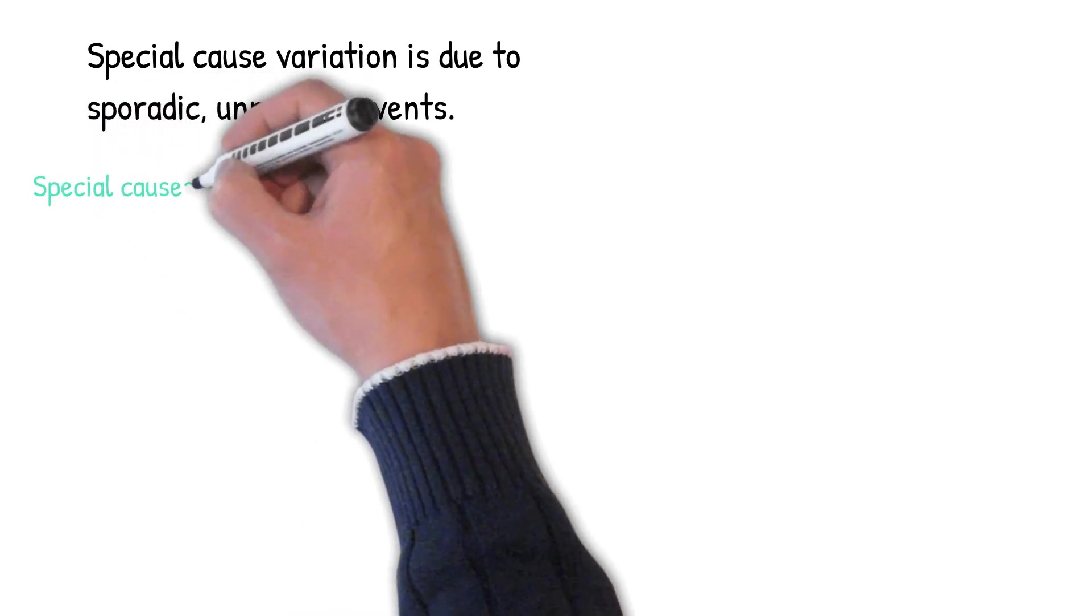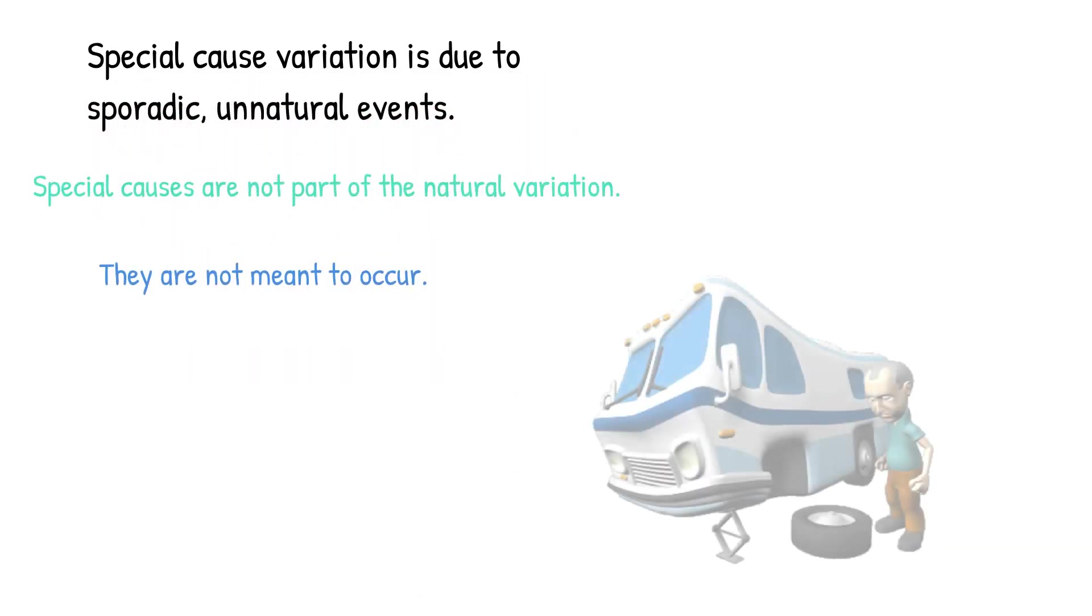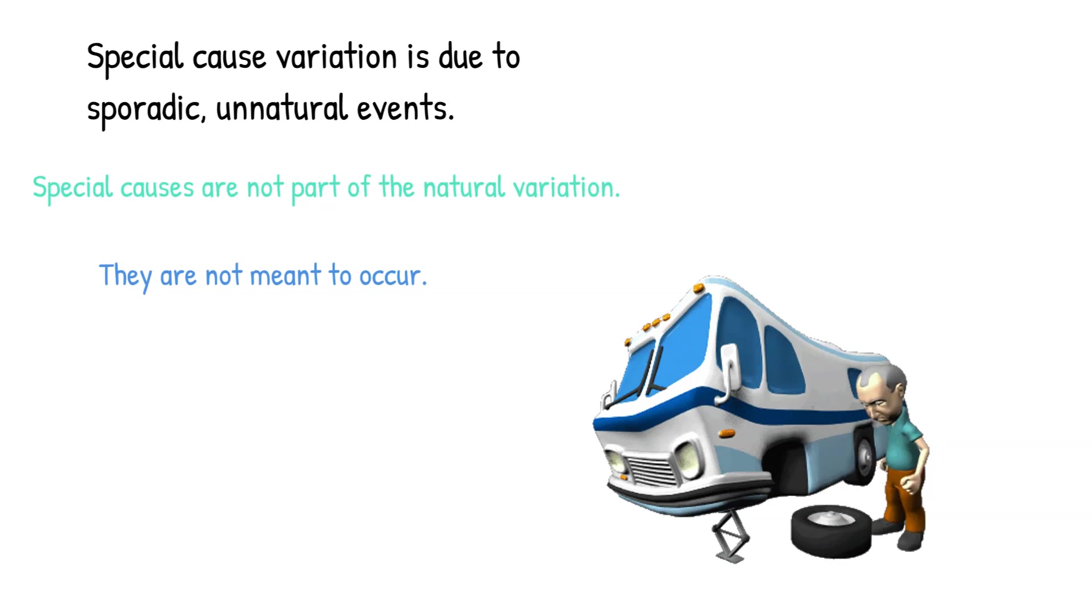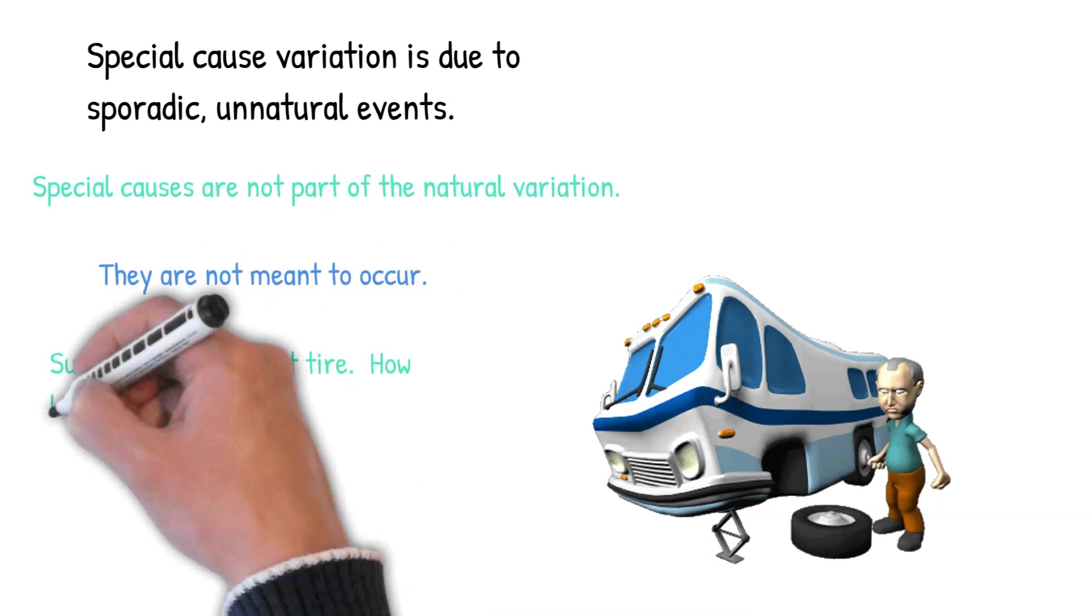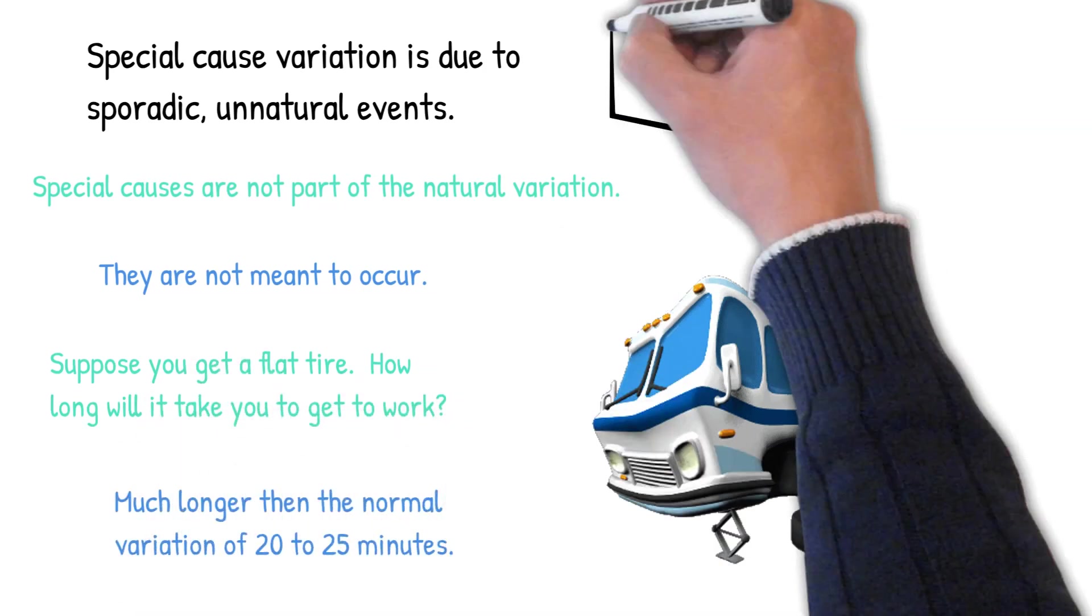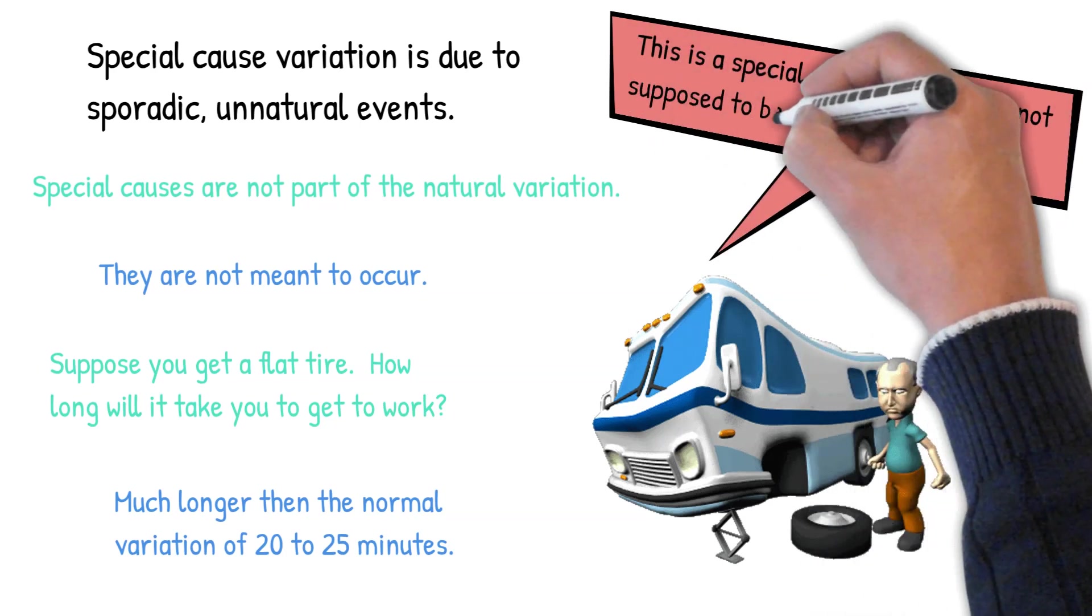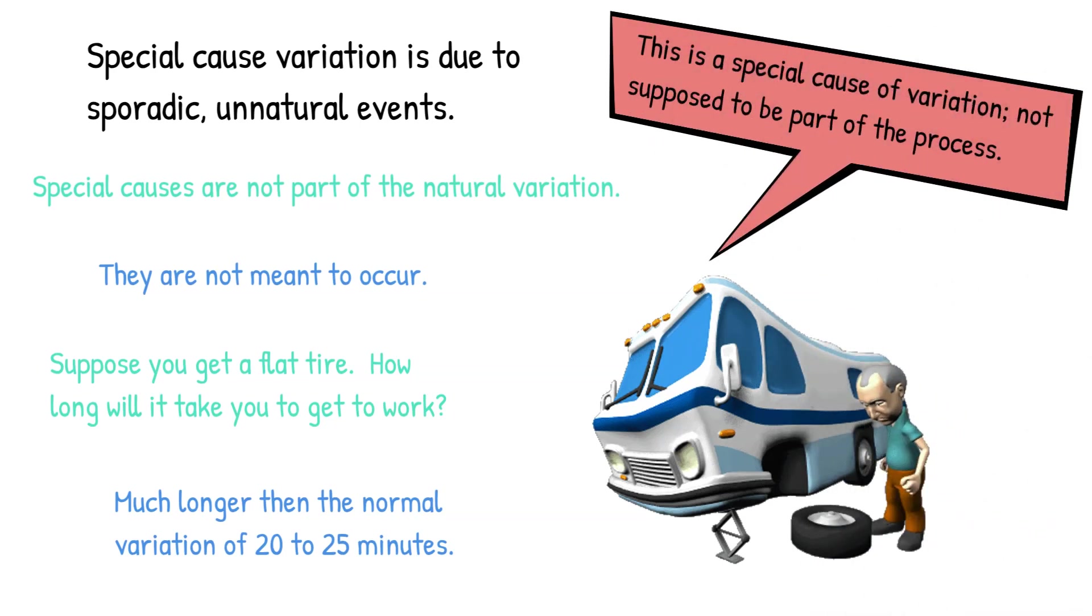Special causes, on the other hand, are due to sporadic, unnatural events. They're not part of the natural variation. They are not meant to occur. Suppose you get a flat tire going to work. How long is it going to take you to get to work? Probably much longer than that normal variation of 20 to 25 minutes. So that's a special cause of variation. It's not supposed to be part of the process.